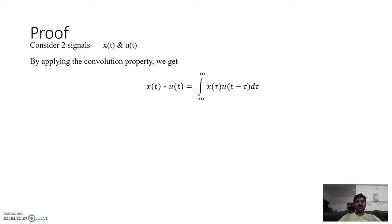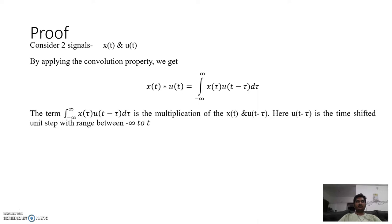The term integral from minus infinity to infinity of x(τ)u(t - τ) dτ is the multiplication of x(t) and u(t - τ). Here, u(t - τ) is the time-shifted unit step with range from minus infinity to t.